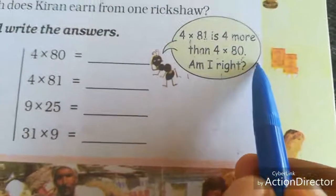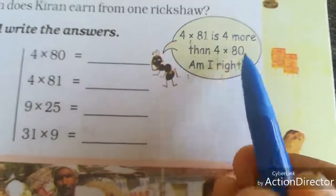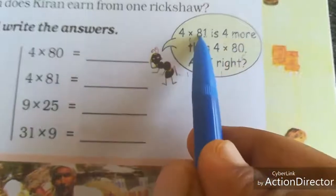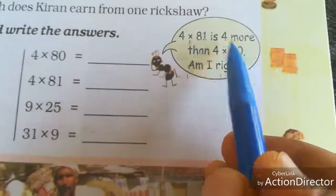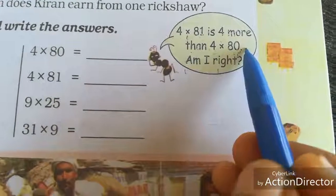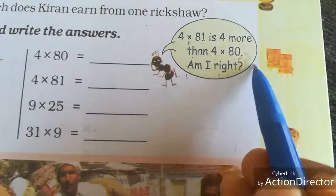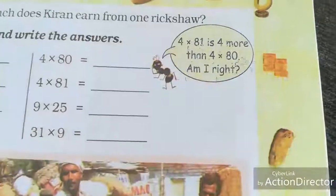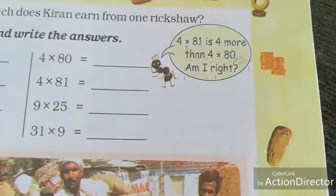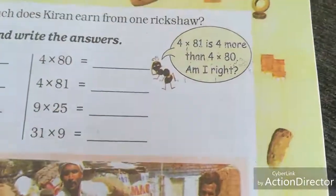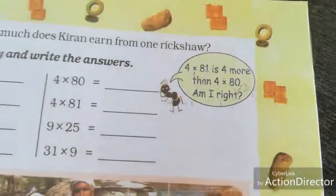So 320. 81 is 1 more than 80, that is 4. So 320 plus 4, that is 324.